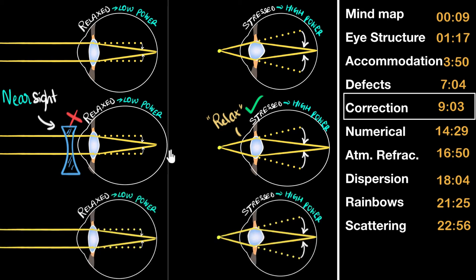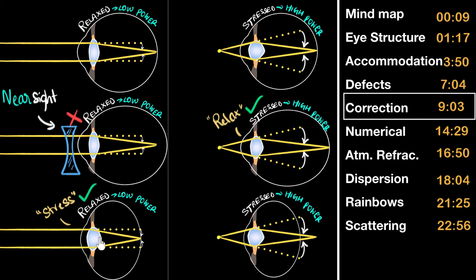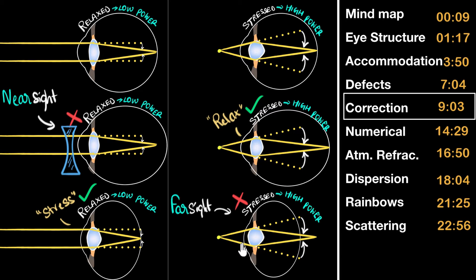What happens if the eyeball shrinks? Now rays of light tend to get focused behind the retina. To refocus it, we need to increase the bending power. For far objects the eye is super relaxed and can stress a bit to increase power — that works fine. But for close objects the eye is already at maximum stress and cannot increase power further — so we can't see them clearly. Eyeball shrinkage causes farsightedness. To correct this, we add a convex lens to increase the converging power.